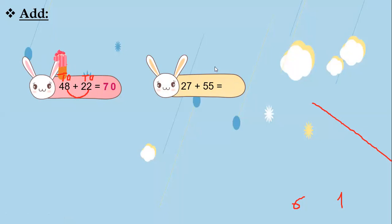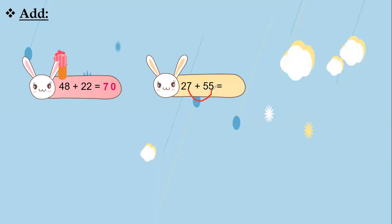The next one: 27 plus 55. I will add ones with ones and tens with tens. First, write the place for each digit: ones, tens for each number. I will add 7 plus 5 — 7 in my mind and 5 on my fingers. After 7: 8, 9, 10, 11, 12. I will not write 12 — I will write only 2 and carry up 1. Don't forget to write the carry.